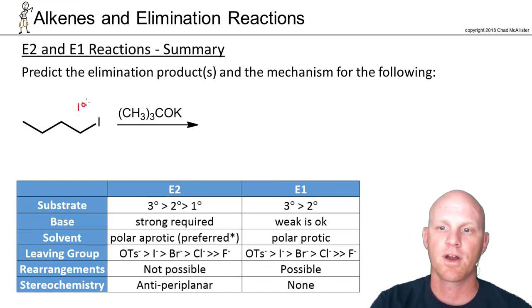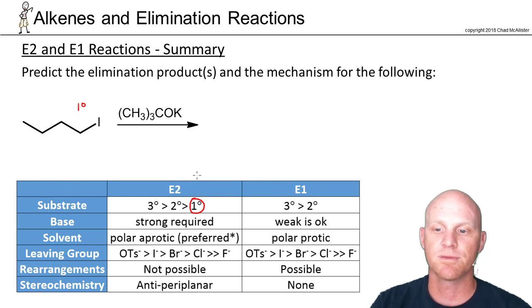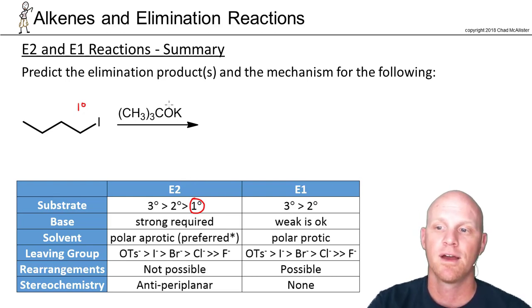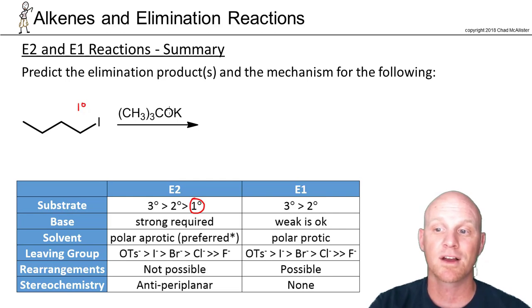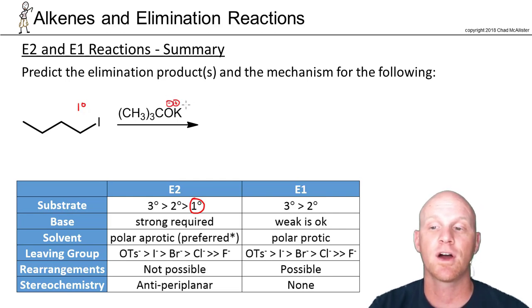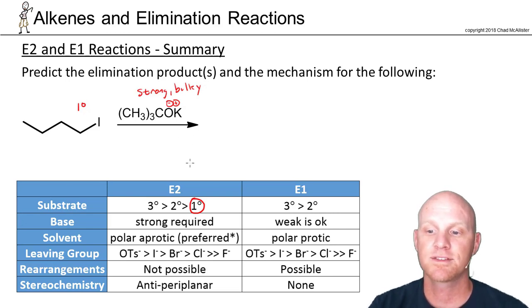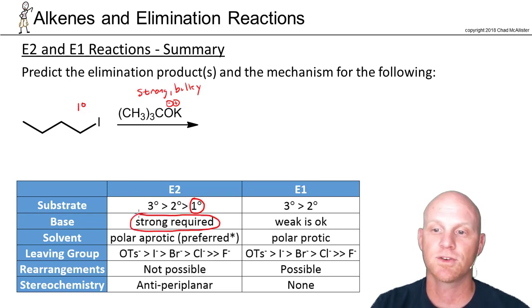In this next reaction, we have a primary halide, which already suggests E1 is unlikely. But more importantly, the base: when you see potassium and oxygen, potassium is a metal and oxygen is a non-metal — that's an ionic bond, meaning potassium positive, oxygen negative. A negatively charged oxygen is a strong base, and more specifically this is also a bulky base. So this is definitely going E2.